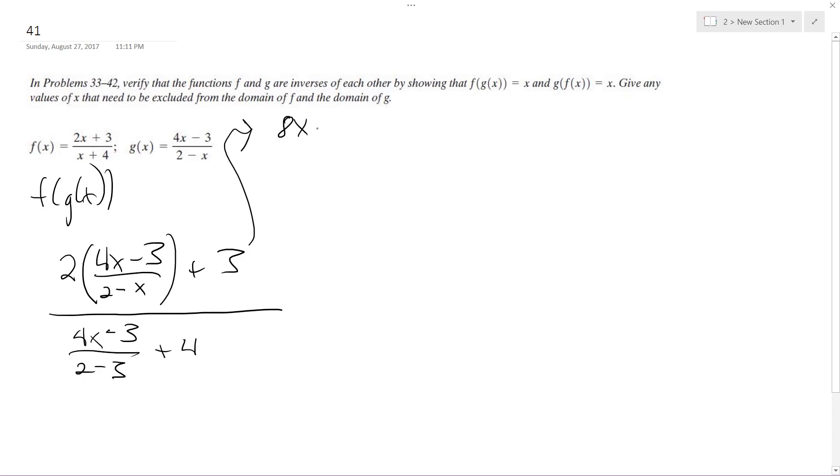So I get 8x minus 6. I multiply the 2 across. And then what I'm going to do here, you've got to be careful, as I'm, well, plus 3 quantity 2 minus x. And then on the bottom, there's just 2 minus x.